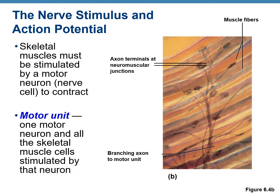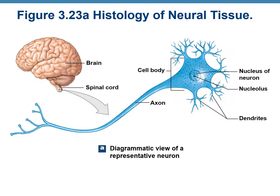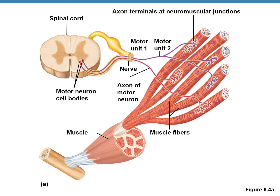Muscles contract when stimulated by a nerve cell, more specifically a motor neuron — a neuron that carries commands from the brain or spinal cord to the peripheral nerves. In this context, a motor unit consists of one motor neuron and all the skeletal muscle cells that this motor neuron is stimulating or controlling. One neuron could control more than one muscle fiber. A neuron has a cell body, dendrites, and an axon. This figure shows two motor units controlling different muscle fibers.